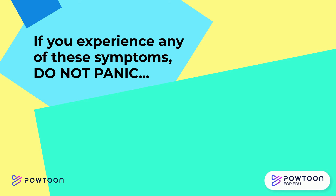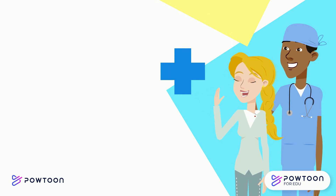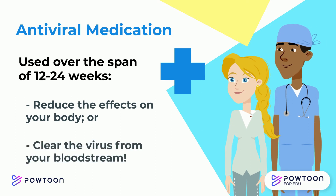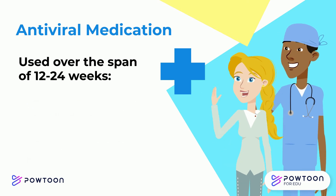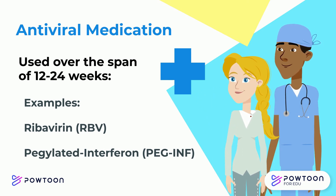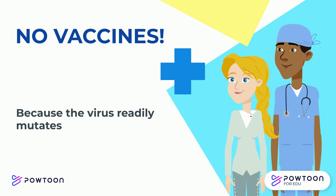If you experience any of these symptoms, don't panic — there are certain treatments in place. Doctors can prescribe antiviral medications over the span of 12 to 24 weeks to either reduce the effects or clear the virus from your bloodstream. These medications include ribavirin (RBV) or pegylated interferon (PEG-INF). Both of these antiviral drugs help with viral inhibition or slow down the replication of HCV in your body. It is important to note that there are no current vaccines available, because the virus readily mutates and it is therefore hard to develop vaccines.